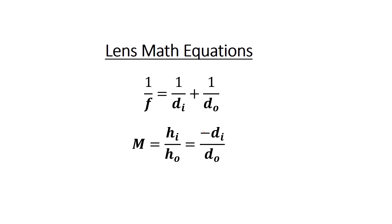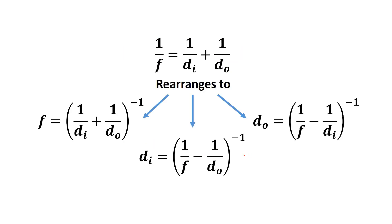The negative in the magnification equation is there purposefully because when you have virtual images, which would be negative images, they actually turn upright. So if this was a negative or virtual image, a negative times a negative would make the magnification positive. When you're rearranging for F, you inverse everything, so that ends up being (1/DI + 1/DO) inverse. When solving for F, that's the only time you'll have a plus in the middle.